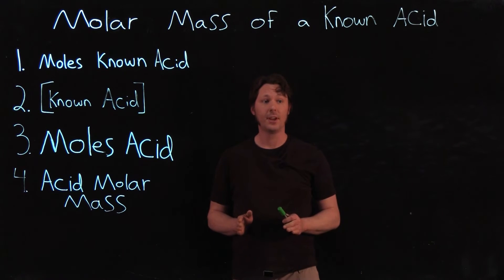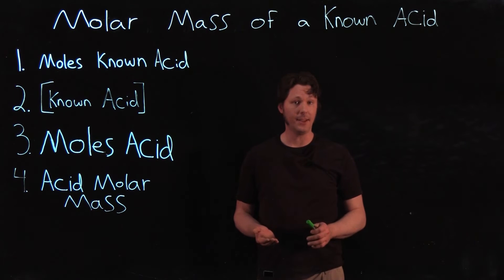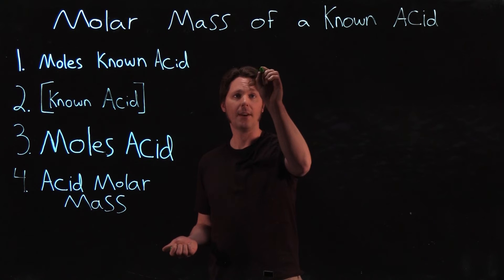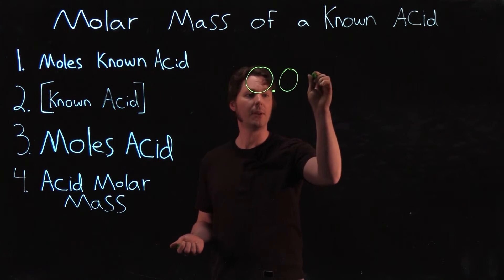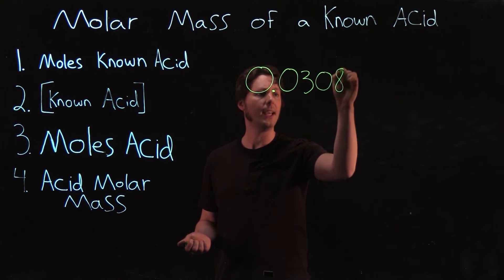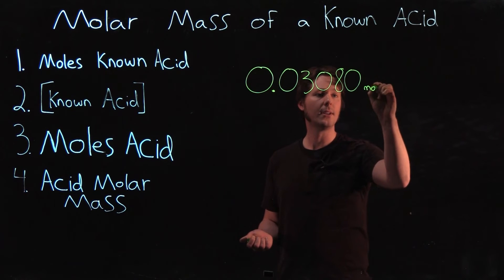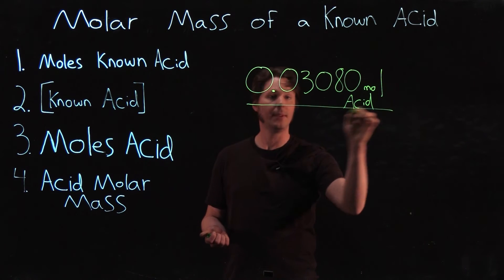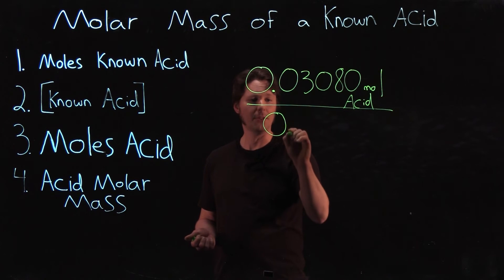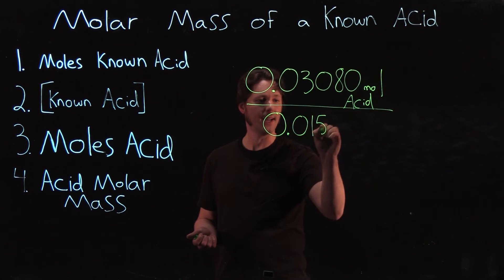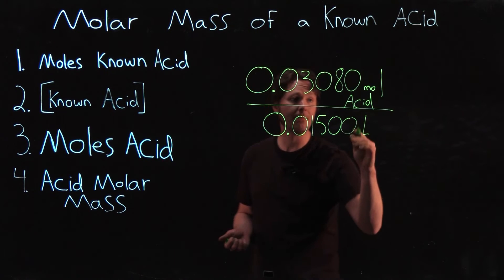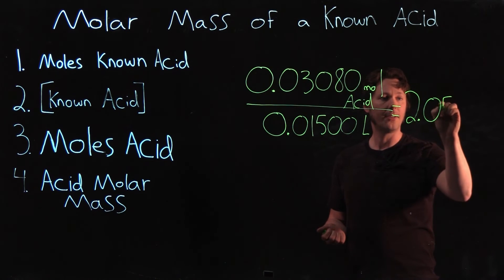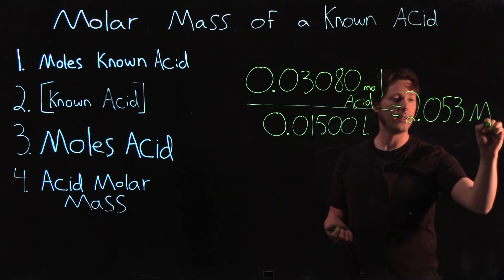The next step is to determine the concentration of the known acid solution. If we titrated 15 milliliters of the solution — this volume comes from the size of your volumetric pipette — the concentration would be 0.03080 moles of acid divided by 0.01500 liters. Moles divided by liters gives us a molarity of 2.053 moles per liter for the acid solution.